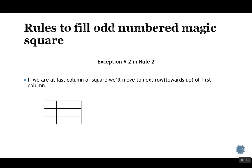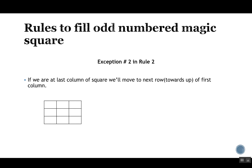Exception two: if we are at the last column of the square, we cannot move right because there is no next column. So we move to the next row towards up and go to the first column, placing the number there.